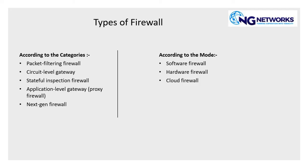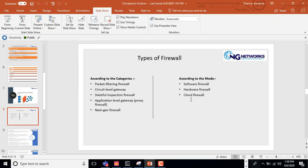Stateful inspection maintains a state table: it records existing traffic sessions and allows traffic that matches a known state, otherwise it drops the traffic. Firewall modes include software firewall, hardware firewall, and cloud firewall — cloud is the newest, where you configure the firewall on a cloud service and divert traffic there without needing on-premise resources. Thank you so much for attending the course — we'll cover more in later sessions.